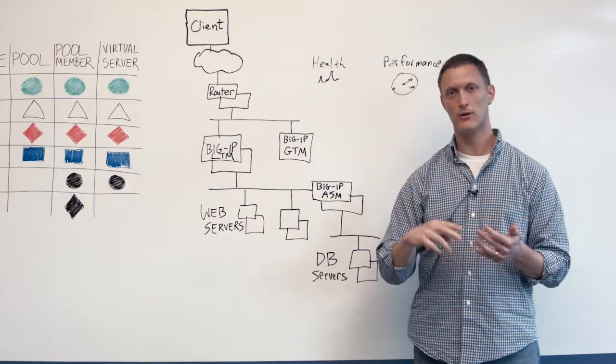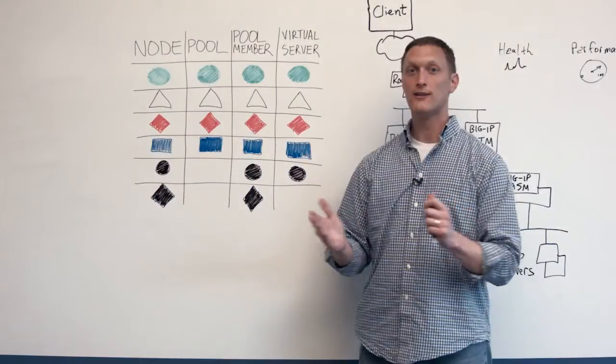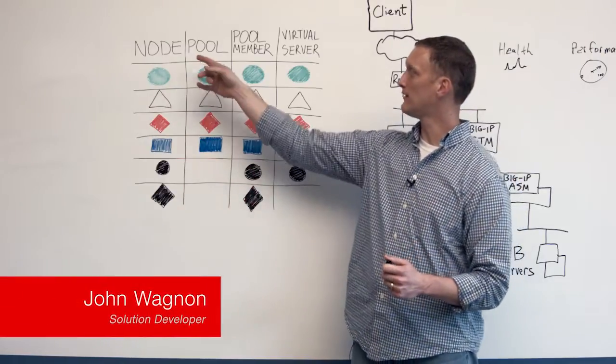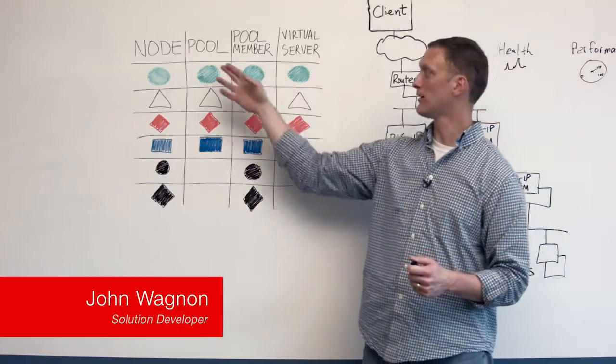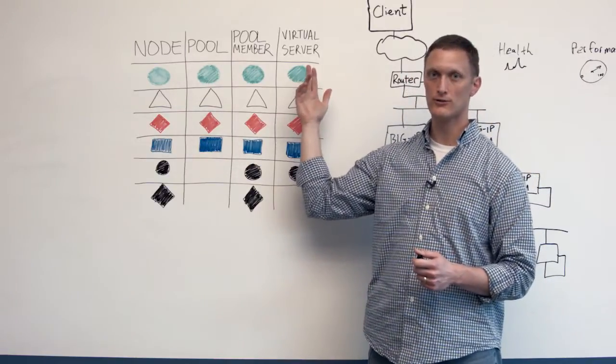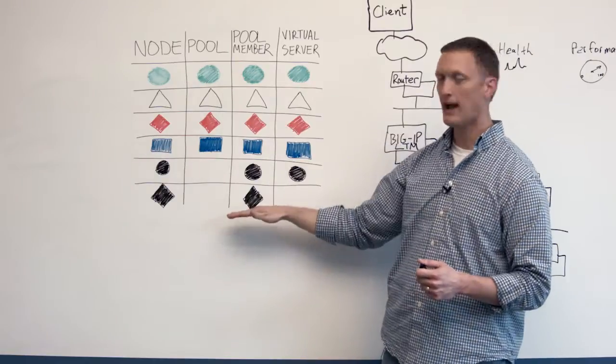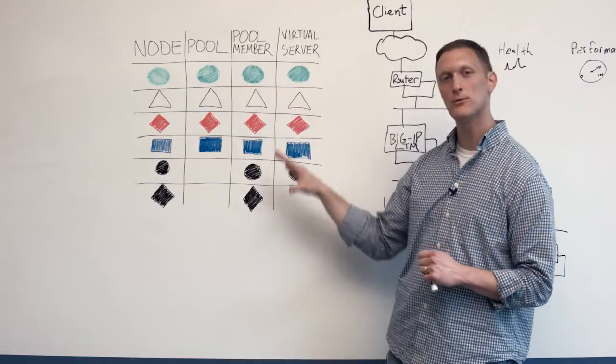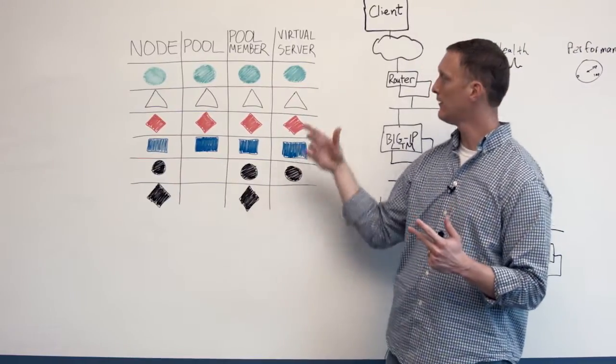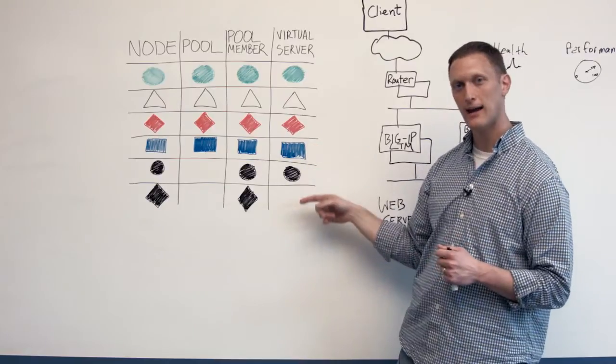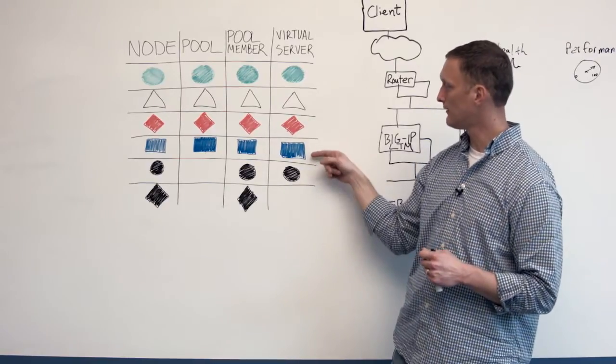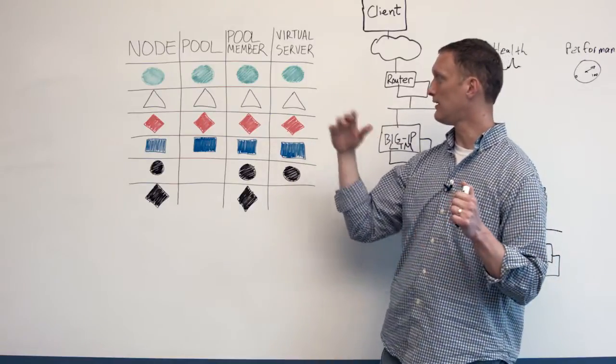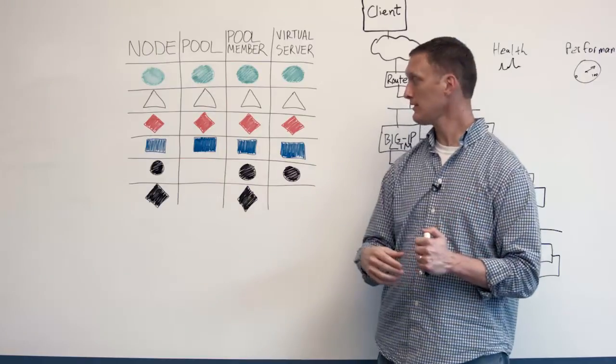Now that we've got what is a monitor, why do we monitor, let's talk about the different types of monitors that we can have on the Big IP and the status indicators to look for. These are the different objects on the Big IP that you can monitor: the node, the pool, the pool member, or the virtual server. And then these are the different status icons that you'll see when you're in your Big IP interface.